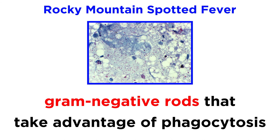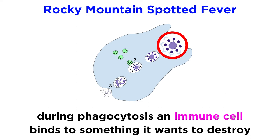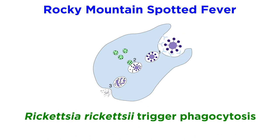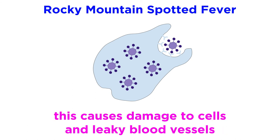These bacteria are gram-negative rods that take advantage of a natural defense mechanism in our cells called phagocytosis. During phagocytosis, an immune cell binds to something specific it wants to destroy, like a virus or infected cell, and engulfs it, drawing it inward to start the destruction process. In this case, Rickettsia rickettsii bacteria trigger phagocytosis, but instead of being destroyed, they're able to multiply and spread, causing damage to cells and leaking of blood vessels.